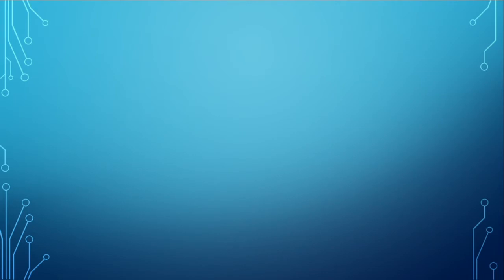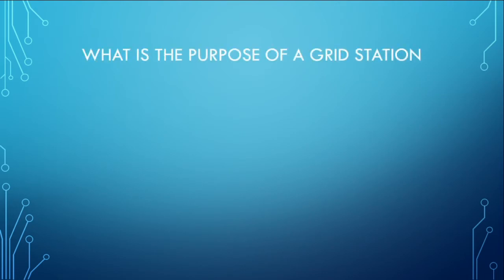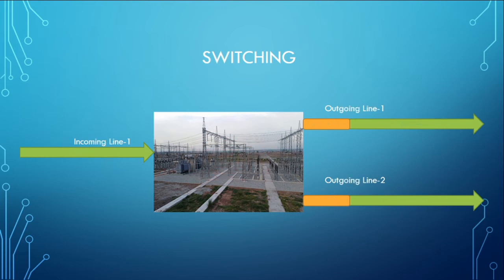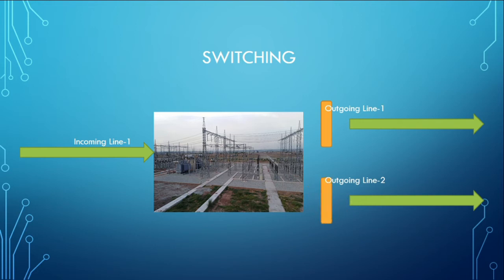There are two basic functions of a grid station: switching and control. One important function is switching — it means controlling on which lines we want the flow of electric power. For example, if we want to carry out maintenance work on outgoing transmission line number one, the line must be in the open position for safety, so we can open it from the grid station. All the power will then flow to outgoing line two. If maintenance is needed on both outgoing lines, we can open the second line from the grid as well. That is how the grid performs its switching function.